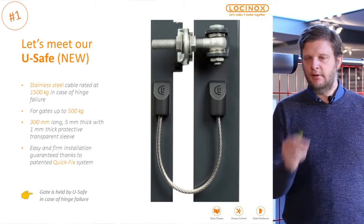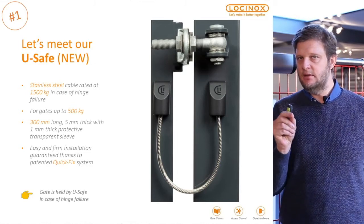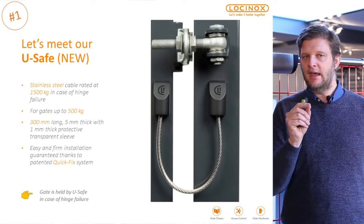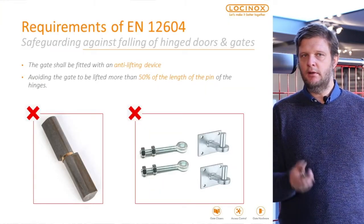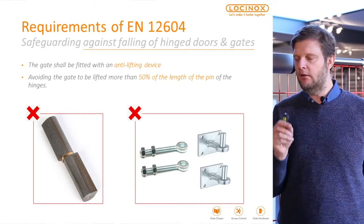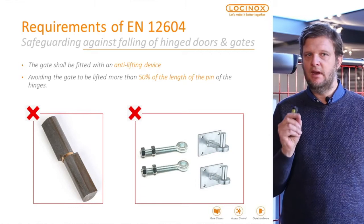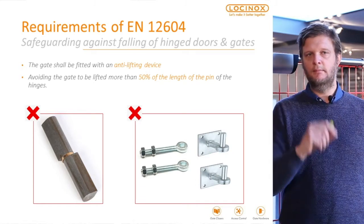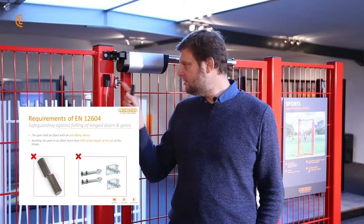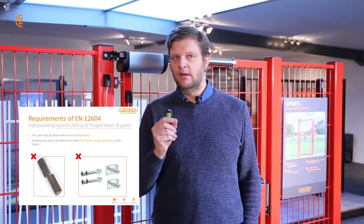Next to the cable, also have a look at the picture on the right-hand side. You'll see that the hinge is very important. This is our 4D hinge and that hinge cannot be lifted off. One of the requirements is safeguarding against falling of hinge doors and gates — the gate shall be fitted with an anti-lifting device. A good quality hinge is very important, like our 4D hinge or a welded hinge, for example the 90-degree hinge here and behind me.